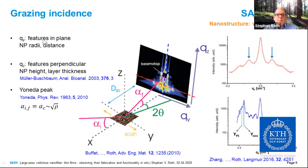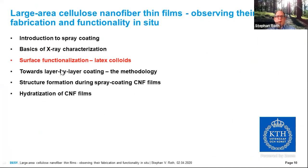To summarize: when we analyze this two-dimensional scattering pattern, we obtain nanoparticle radii and distances from the in-plane cut along Qy, and from cuts perpendicular to the sample surface we can deduce the nanoparticle height as well as layer thicknesses. This is important for the remainder of the talk.